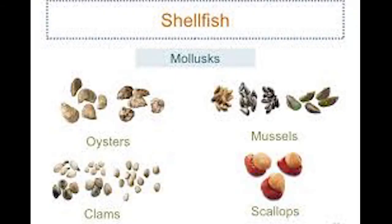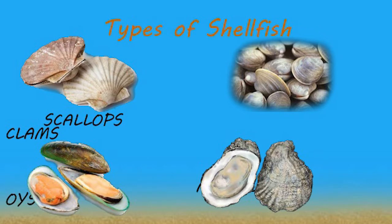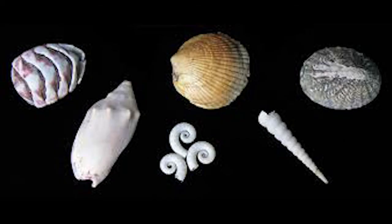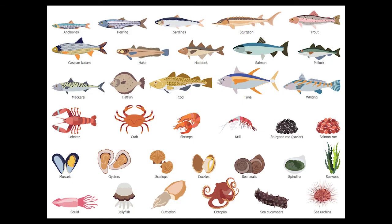Shellfishes are invertebrates with a shell or exoskeleton. There are two groups of shellfishes: crustaceans and mollusks. Mollusks are soft-bodied with no internal skeleton but have a hard outer shell — examples include clams, oysters, and mussels.